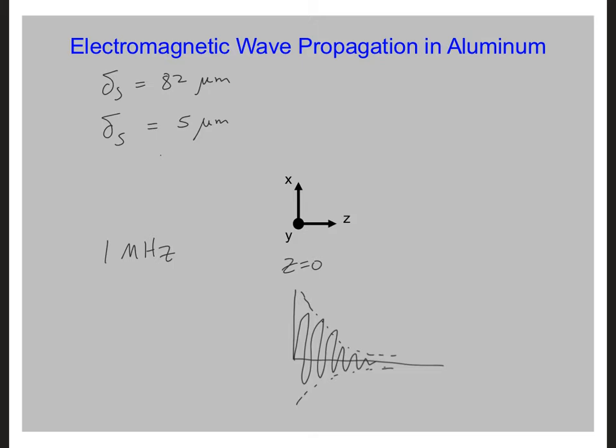But to be more accurate, we should compare how quickly the wave is attenuating relative to the wavelength of the electromagnetic wave in the metal.